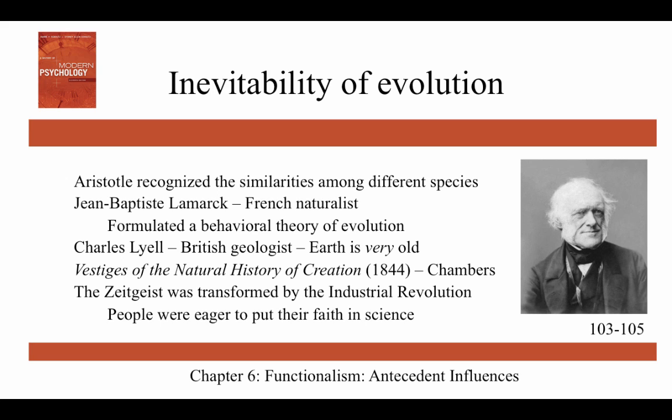John-Baptiste Lamarck was a French naturalist who formulated a behavioral theory of evolution. His idea was that an animal's body could be modified to adapt to its environment, and those modifications were inherited by succeeding generations — so a giraffe developed a long neck over generations of having to reach higher for leaves. It should be pointed out that Lamarck was wrong, because he thought organisms passed on environmental adaptations during their lifetime rather than predetermined genetic information. But he was an influence on Darwin, and it's a clever idea.